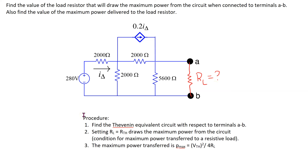To solve this maximum power transfer problem, the general steps are as follows. First, we need to find the Thevenin equivalent circuit with respect to the terminals A and B. Next, setting the load resistance equal to the Thevenin resistance will draw the maximum power from the circuit. This is the condition for maximum power transferred to a resistive load, and the value of this maximum power transferred is given as follows.